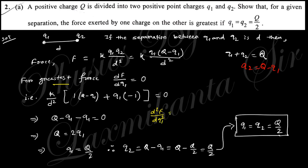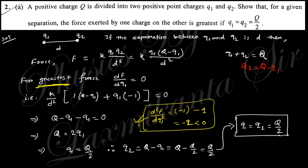Taking d²F/dq1² gives minus one plus minus one, which equals minus two, and this is less than zero. For a maximum point the second derivative must be less than zero, so this condition is satisfied. This confirms it is indeed a maximum — clear.